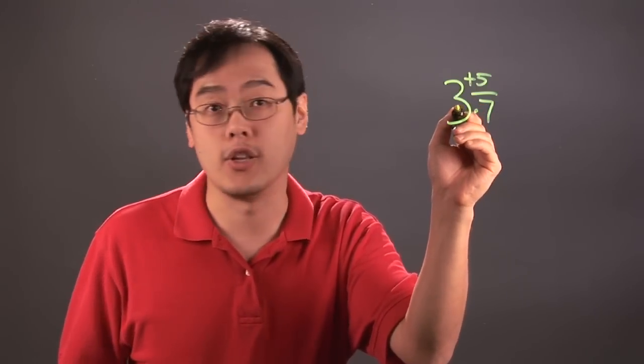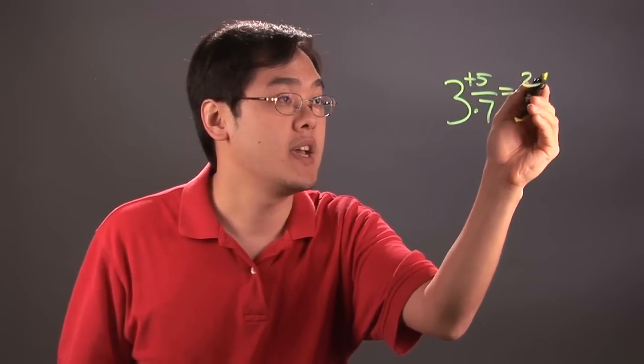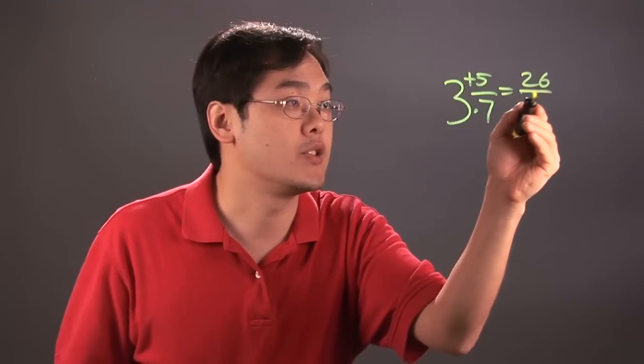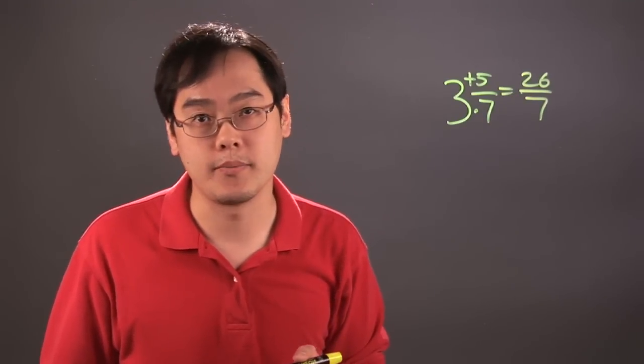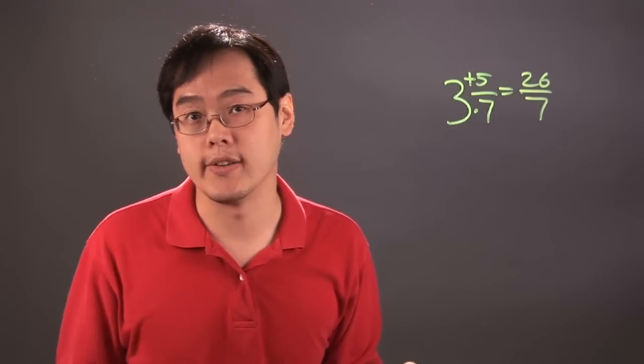So 7 times 3 is 21 and then 21 plus 5 is going to be 26. Now what you do is you keep the denominator as is so you have 26 over 7. But let's do another illustration to drive this point home.